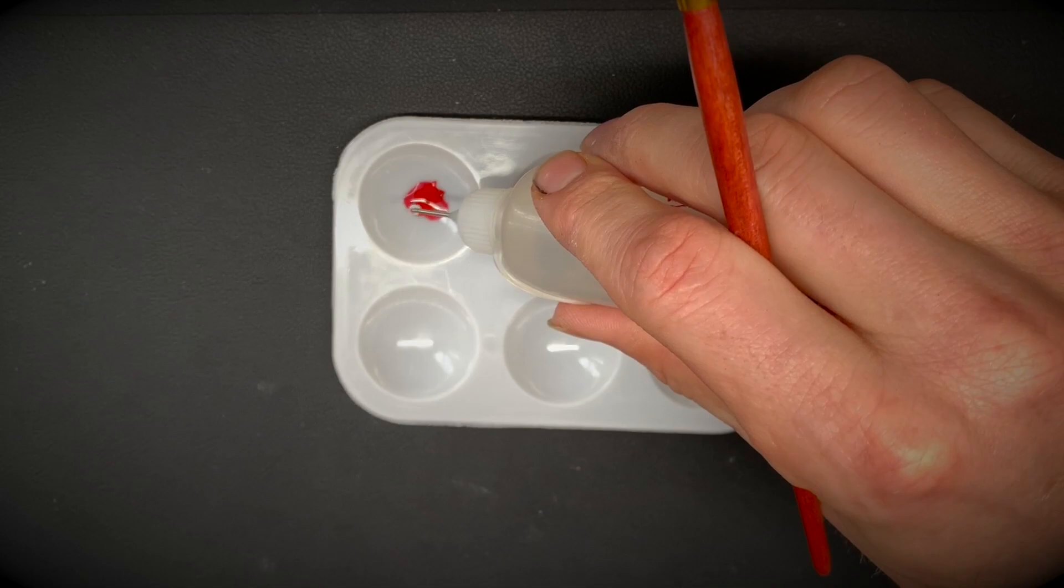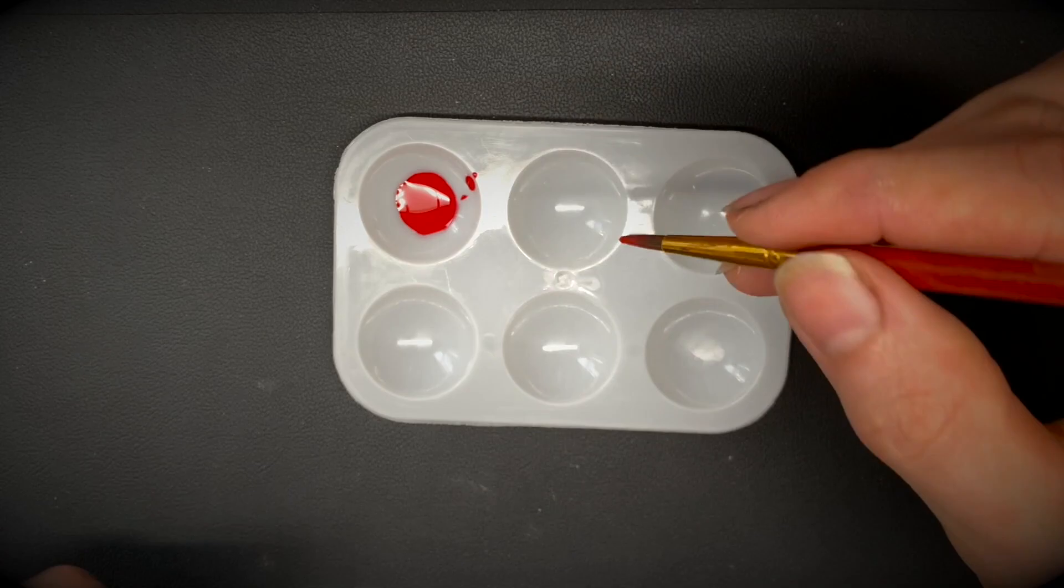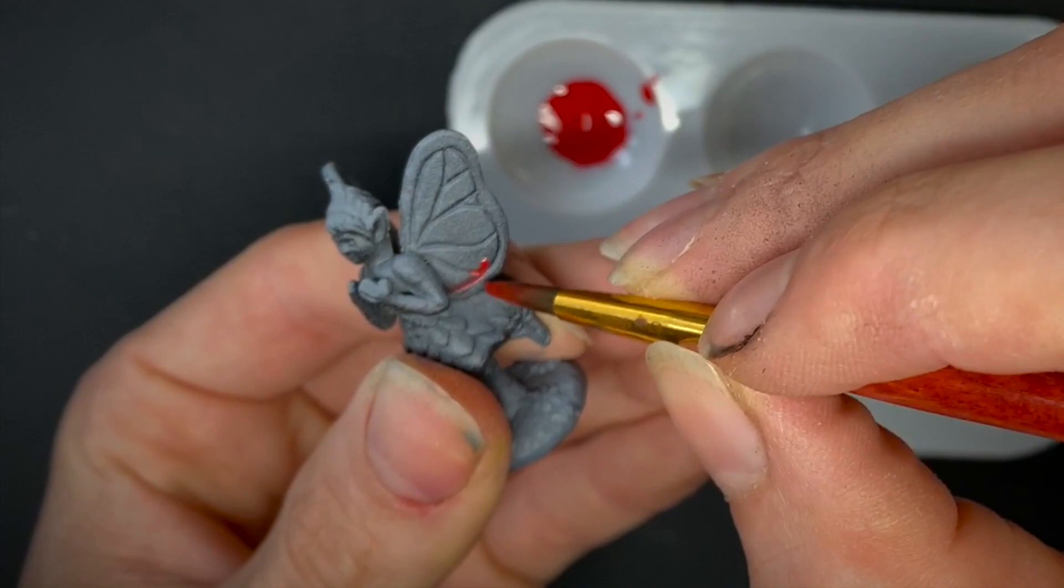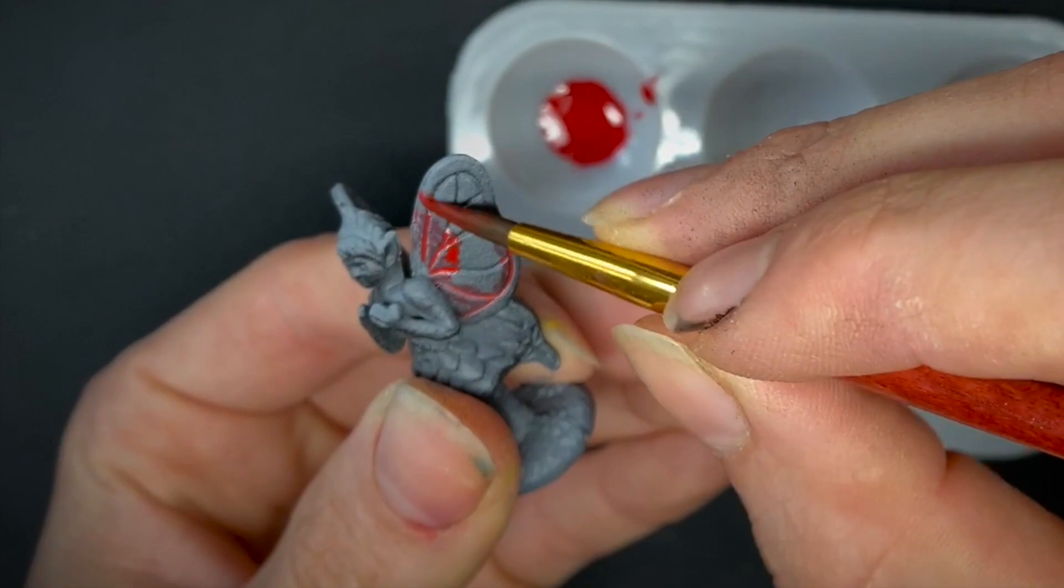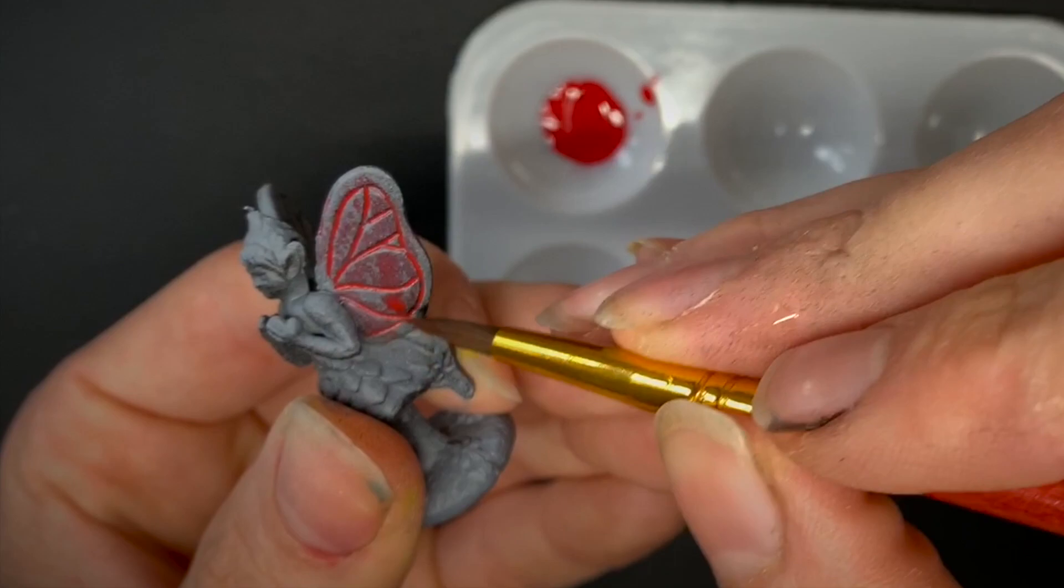I find one drop of paint to 10 drops water starts you off with a fairly good base for a wash. All you need to do is start applying it to your model. Citadel paints are about a medium thickness I would say, so I would start off with probably the 10 drops.